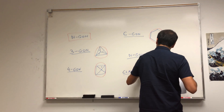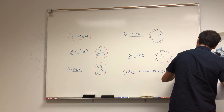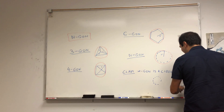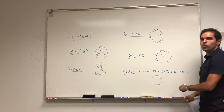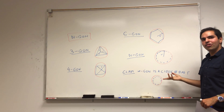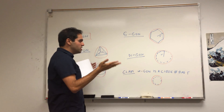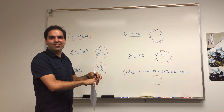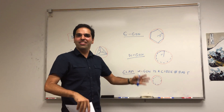Claim: an infinite-gon is a circle of radius r. The picture should look like that — if you have many, many sides, you get a circle of radius r. I want to show this is at least true in terms of areas: if you take the area of an n-gon and let n go to infinity, you indeed get the area of a circle.